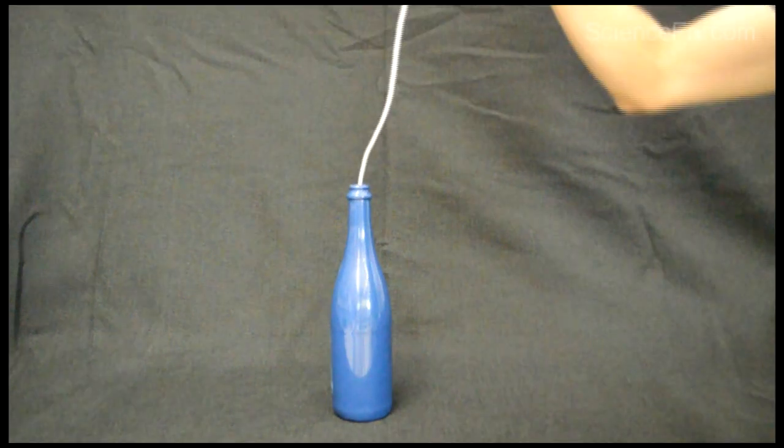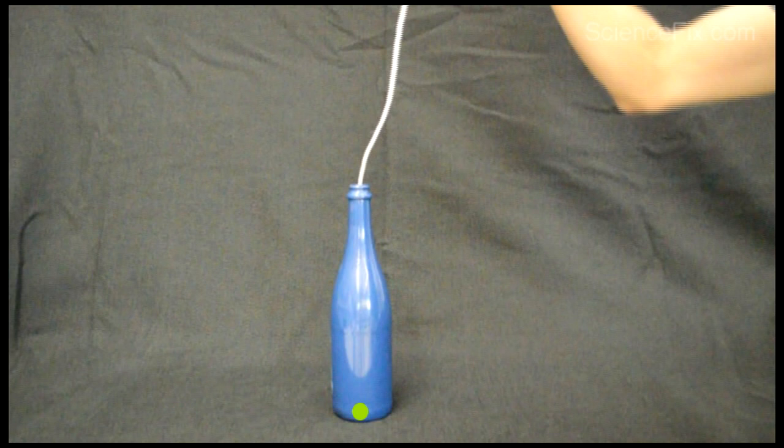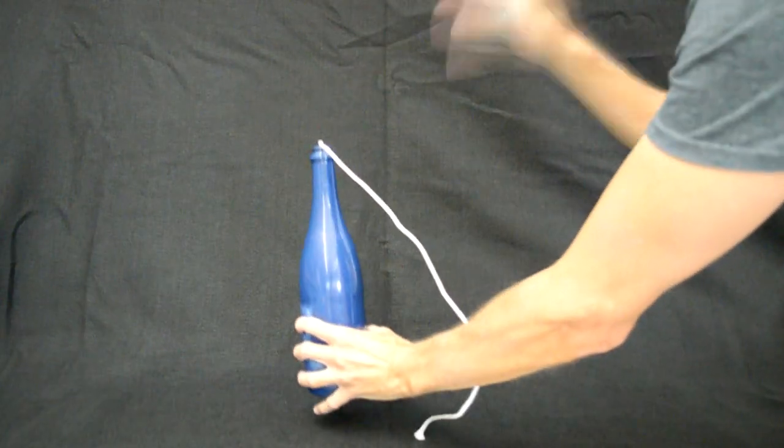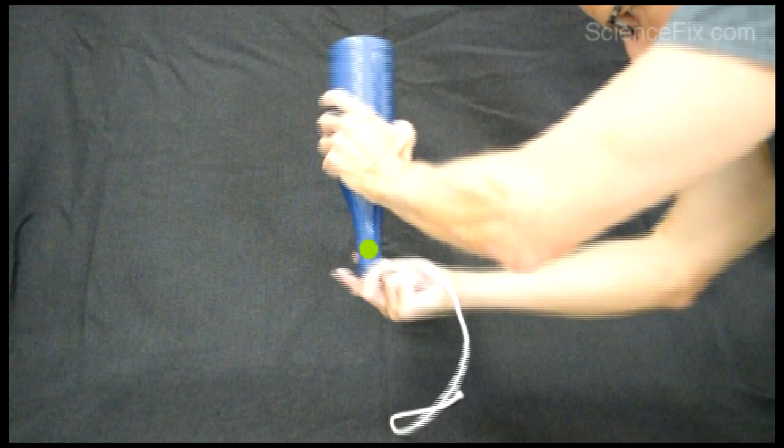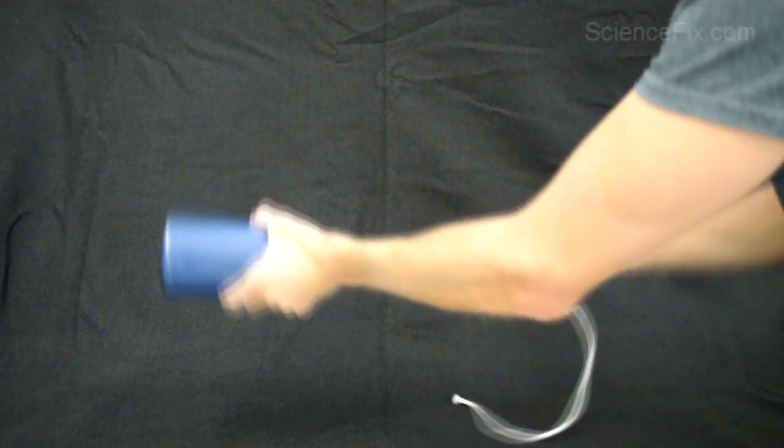When you first put the rope in, at the bottom of the wine bottle, represented by a green dot, is the cork. The cork's at the bottom, and that's why the rope can easily go in and out of the bottle. But when I turn the bottle upside down, the cork falls to the bottom into the neck.